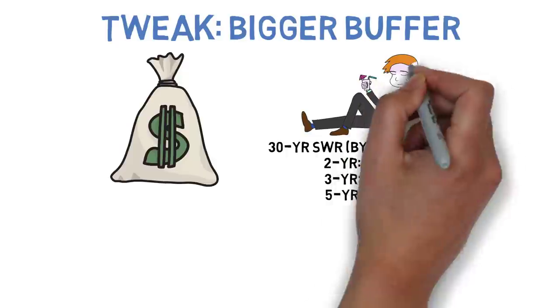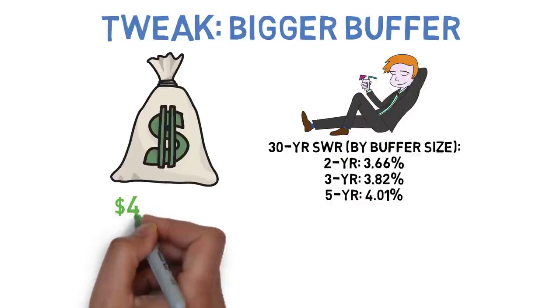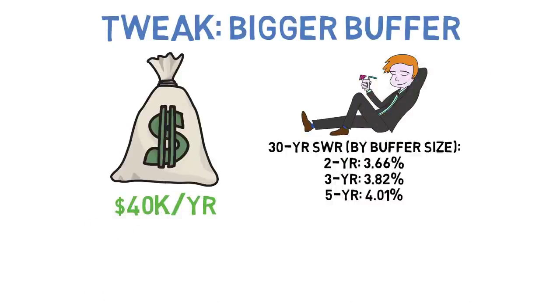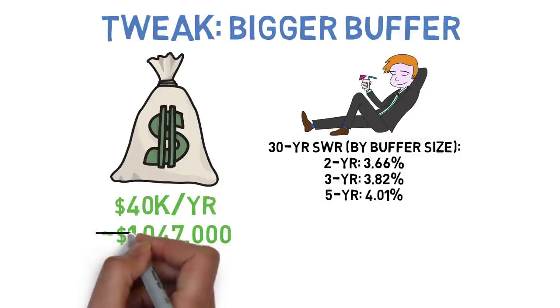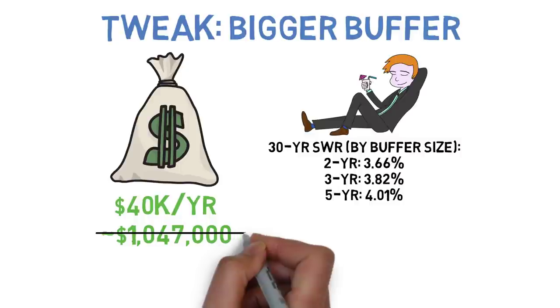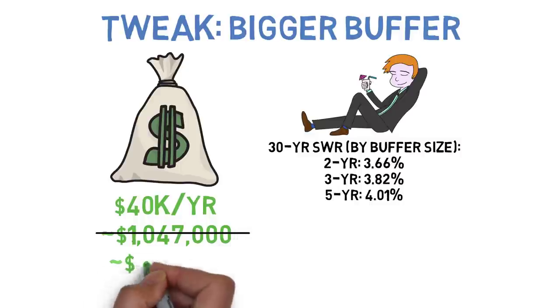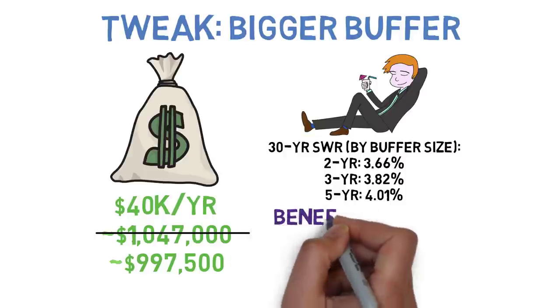Under the assumptions we're using you'd have to put away $48,000 worth of cash to build your three-year buffer into a five-year buffer. Based on these figures and assuming you wanted to live on a $40,000 a year income in retirement you'd need to have a nest egg valued at around about $1,047,000 with a three-year cash buffer.